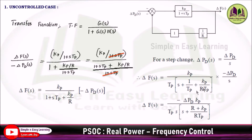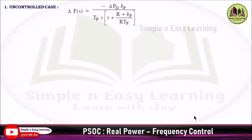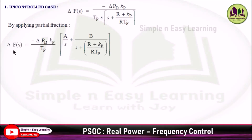In the second and third terms, taking LCM gives R plus KP divided by R times TP. Applying partial fractions, del F(s) equals minus del PD times KP divided by TP, with partial fraction terms A/s plus B divided by the second term S plus (R plus KP) divided by R times TP.